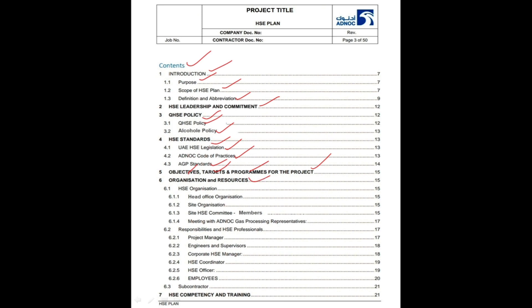Sixth one is Organization and Resources. In this section there are two subsections: HSC organization and responsibilities and HSC professionals. In HSC organization, there will be a head office organization and site organization, and site HSC committee members meeting with ADNOC gas processing representatives will be explained. In responsibilities and HSC professionals, all site key HSC personnel's responsibilities will be explained, including project manager, engineers and supervisors, corporate HSC manager, HSC coordinator, HSC officer, employees, and subcontractor responsibilities.